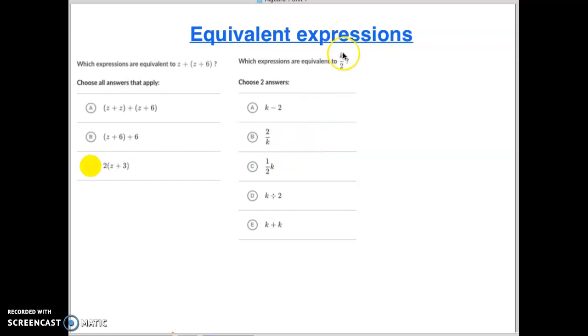2 divided by k is not the same as k divided by 2. Those are almost opposites. Hey, here's 1/2 of k. This is exactly what this one is - multiplying k by 1/2. This bar right here is just a division bar, so it's k divided by 2.